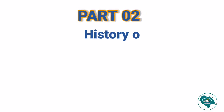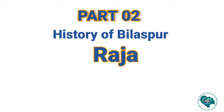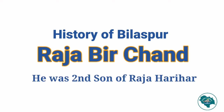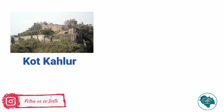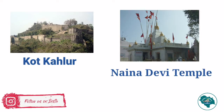Part 2 is all about the history of Bilaspur, which starts from the founder of the state, Raja Birchand, who found an idol of Kurdhi Durga beneath a stone slab. He built a fort and named it Koth Kehalu, and also constructed the Naina Devi temple for the idol.